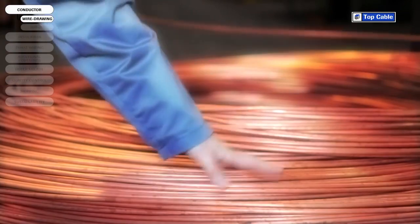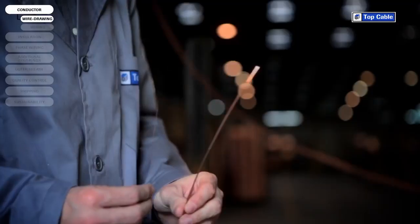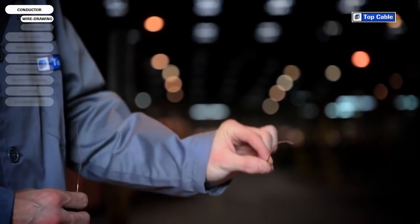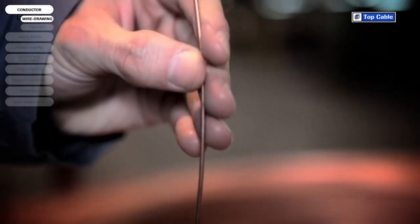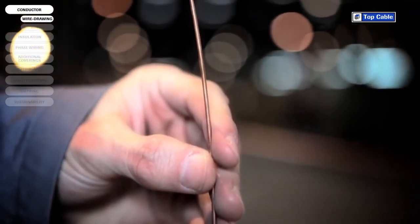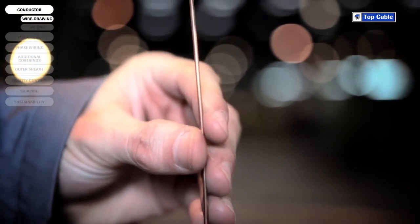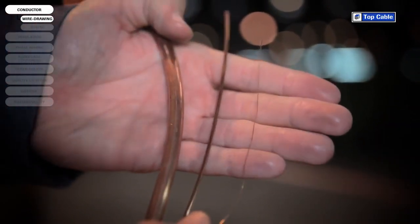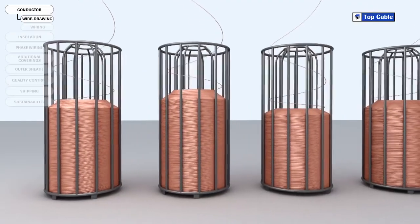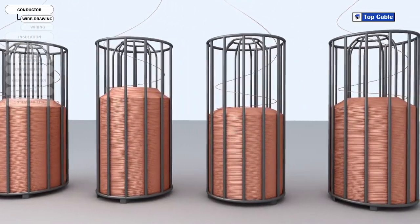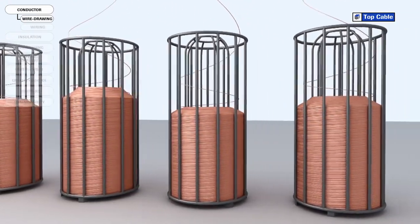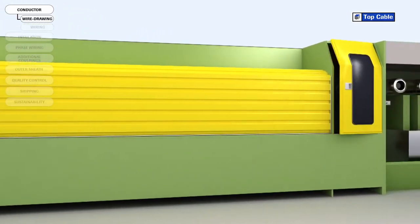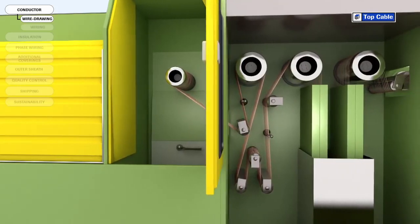The first stage of the wire drawing is simply called drawing. The diameter of the wire rod is reduced to 2 mm during this process. This 2 mm wire is then drawn further to reduce the diameter of the wire to the size needed for each kind of conductor. In the last stage of wire drawing, all the wires undergo a heat treatment called annealing. The aim of this stage is to increase the ductility and conductivity of the copper.